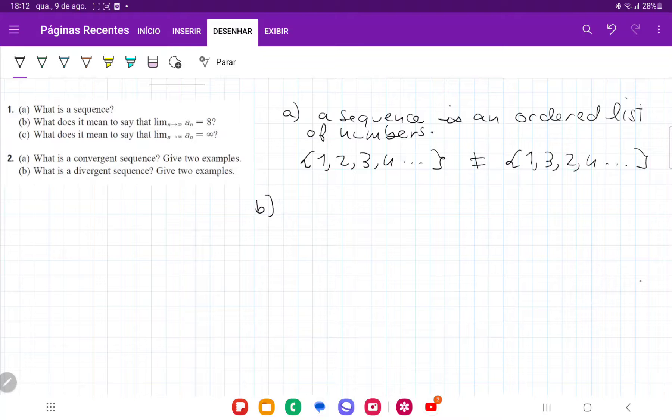And so for B, it's asking us, what does it mean to say that the limit of the sequence a_n, as n tends to infinity, is 8? It just means that as the number of terms increase in my sequence, their values get closer and closer to 8. So as the number of terms increase, their values tend to 8.